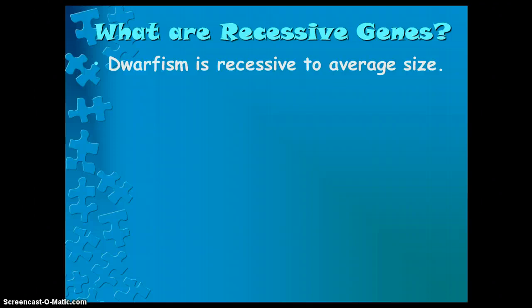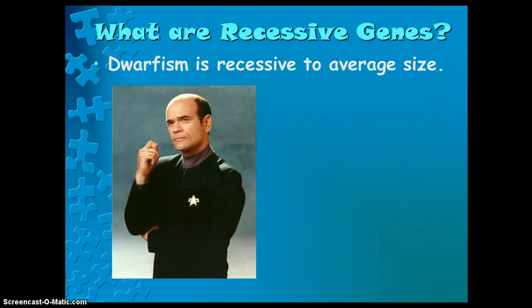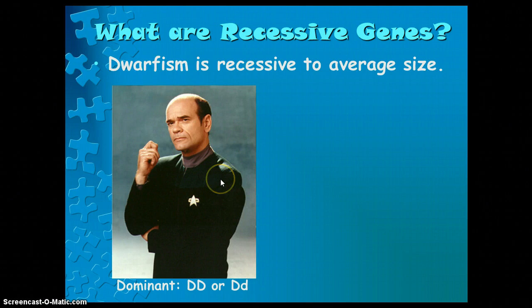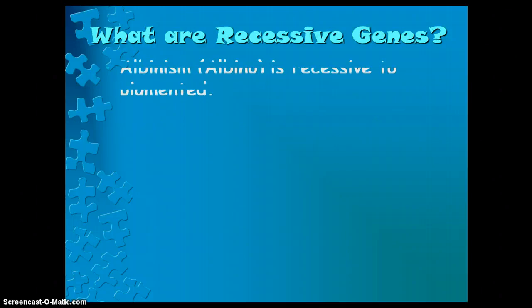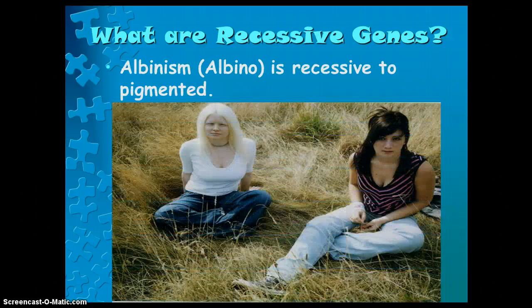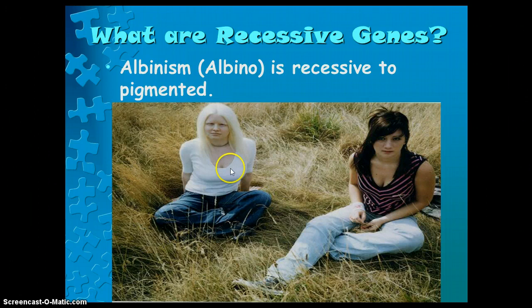What are recessive genes? Dwarfism is recessive to average size. So the average-size individual has big D, big D or big D, little D, but the dwarf would be recessive with little D, little D only. Albino is recessive to pigmented, so one girl would have a different genotype than the other — the pigmented individual would have dominant genotypes, while the albino individual would have the recessive genotype.